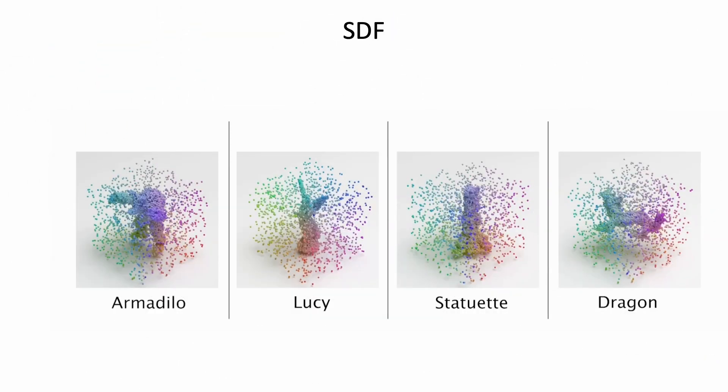Signed Distance Function (SDF) as a classic geometry representation describes a set of continuous ISO surfaces where a 3D surface is represented as the zero-level set of the function.